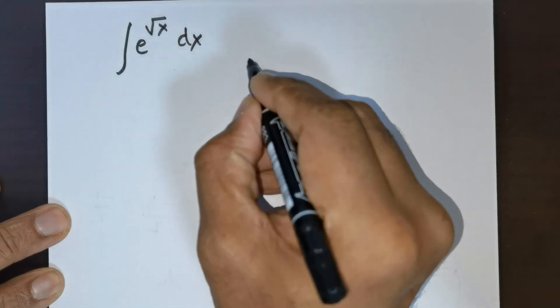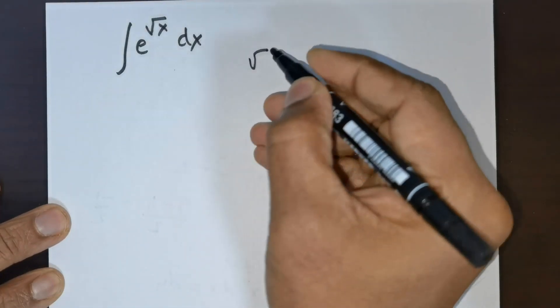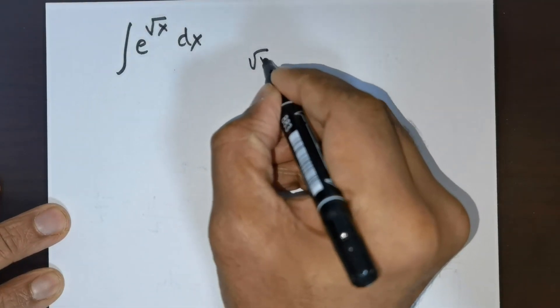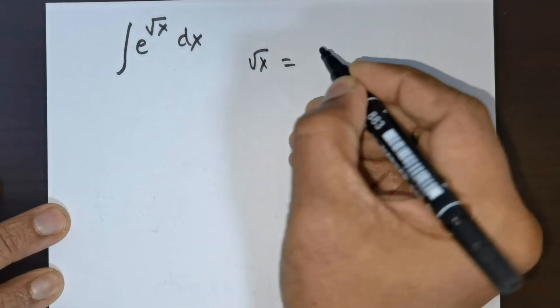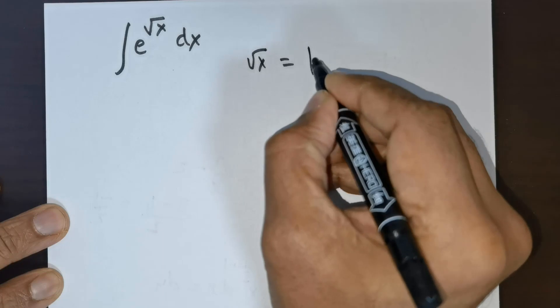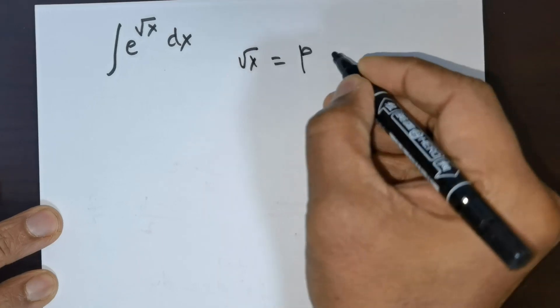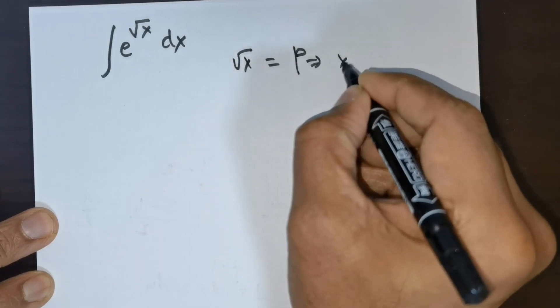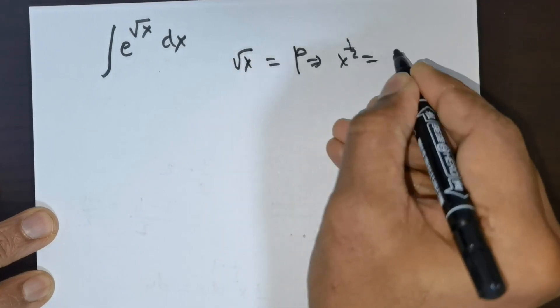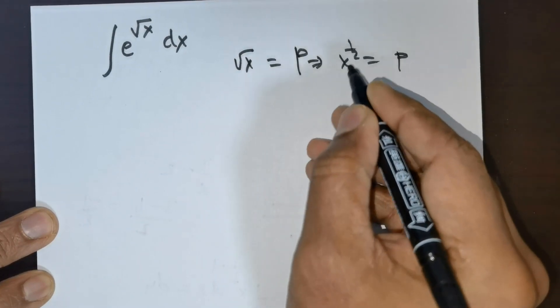Good day. First, let me take the root of x to be equal to some p. So this means x raised to the power of 1 over 2 is equal to p.